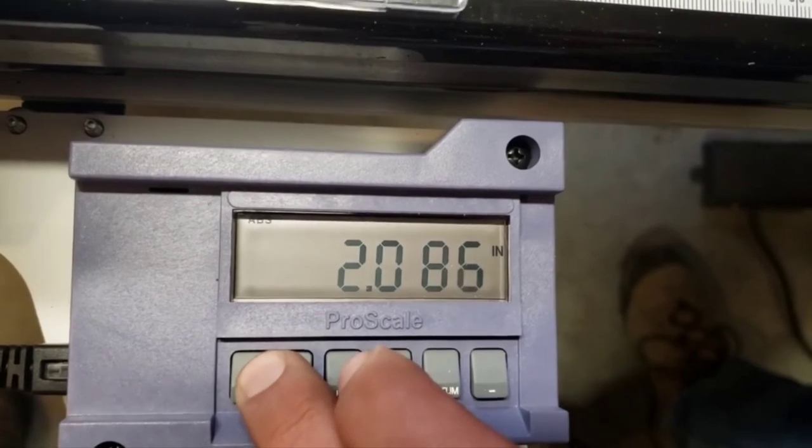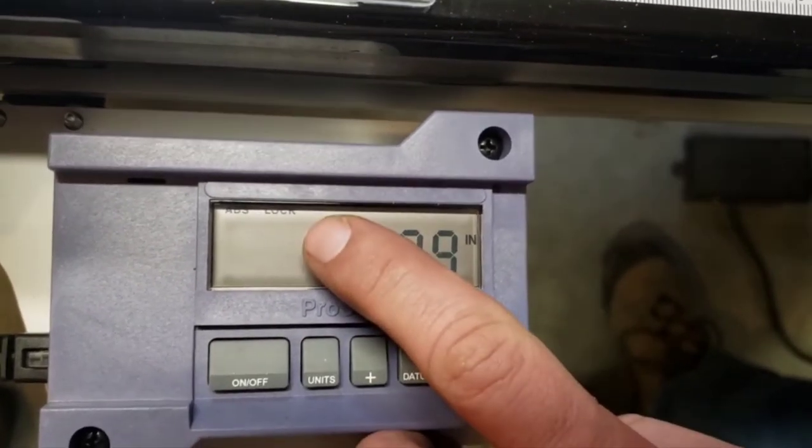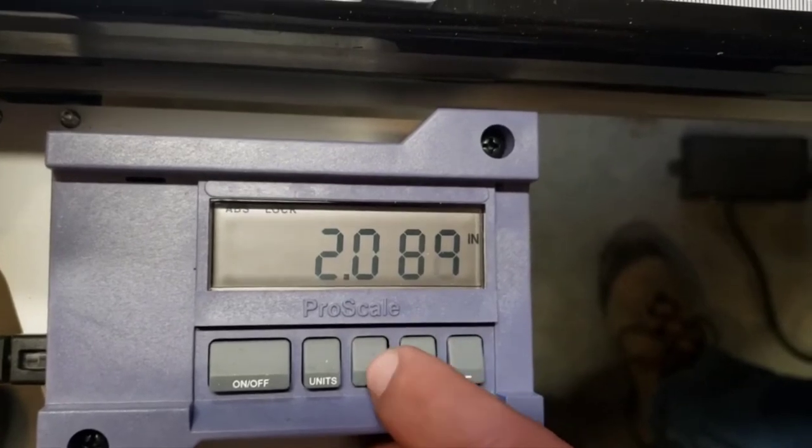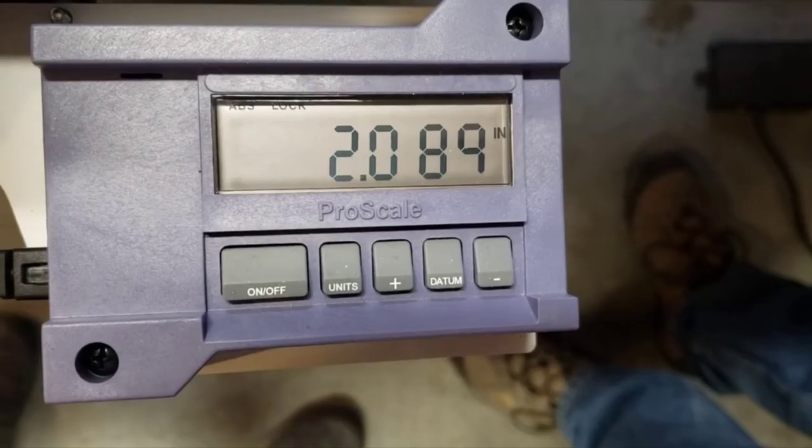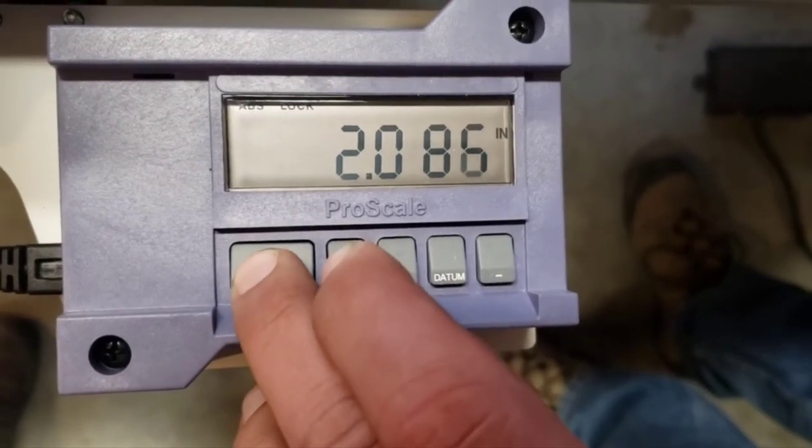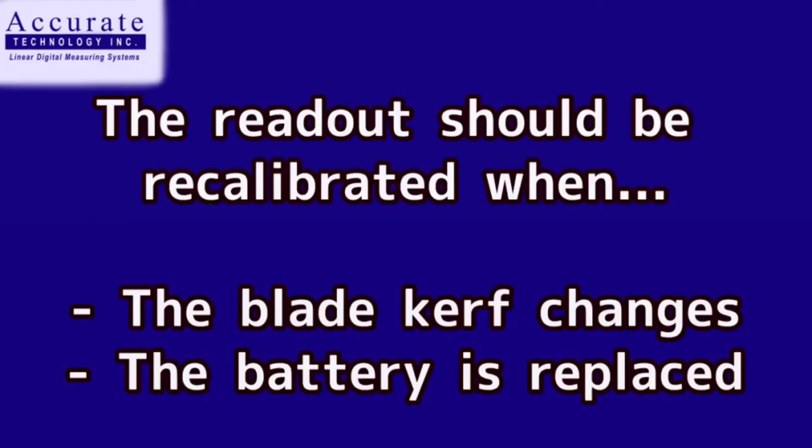To lock the keypad, press and hold the on-off button. Tap the units key. The lock symbol will turn on on the display. This disables the plus, minus and datum keys. To unlock the keypad, press and hold the on-off button. Tap the units key. The lock symbol will disappear.